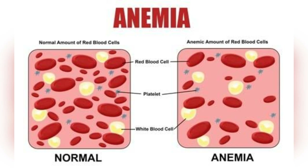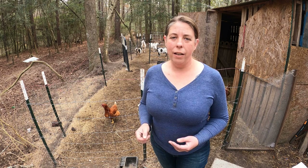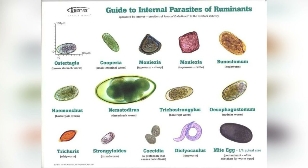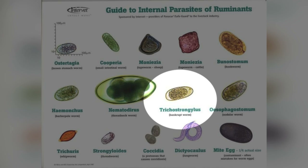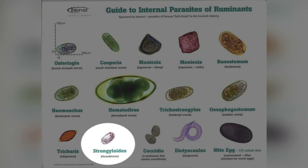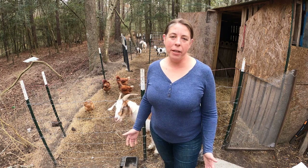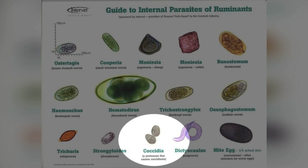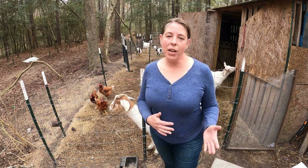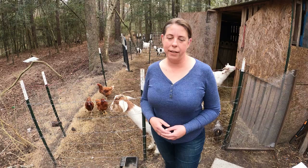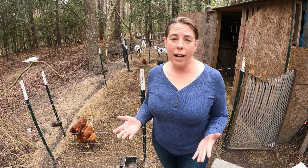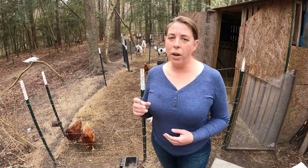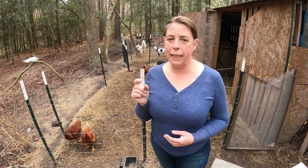Other common types of internal parasites are the Strongyles family, which includes the Pancrop worm, the Brown Stomach worm, and the Thread worm. The other common parasite you'll need to deal with is called Coccidia — that's actually a protozoa, and the most common symptom associated with Coccidia is diarrhea.